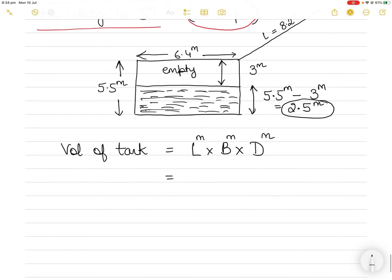Now here the length available to us is the full length 8.2 meters. The breadth available to us is 6.4 meters and the height available to us is of course 2.5 meters. This is the volume of the tank available to us for loading.